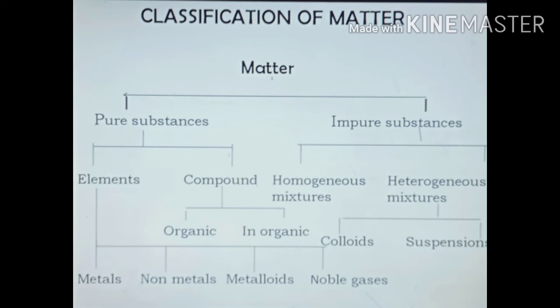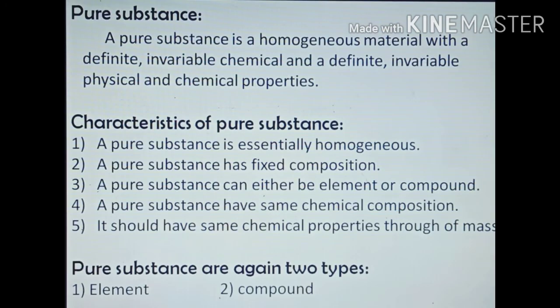Impure substances are classified into two types: homogeneous mixtures and heterogeneous mixtures. Heterogeneous mixtures are further classified into colloids and suspensions. A pure substance is a homogeneous material with a definite, invariable chemical composition and definite, invariable physical and chemical properties. Its characteristics include: it is essentially homogeneous, has a fixed composition, can be either an element or a compound, and has the same chemical composition and chemical properties throughout its mass.